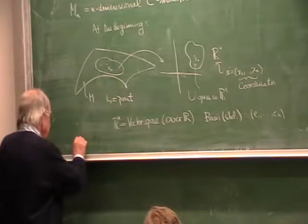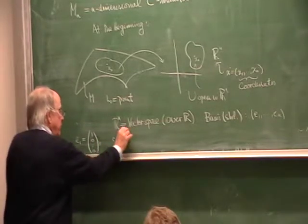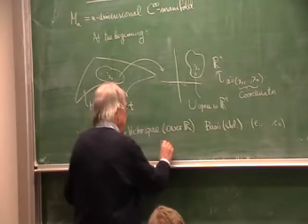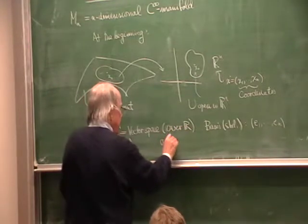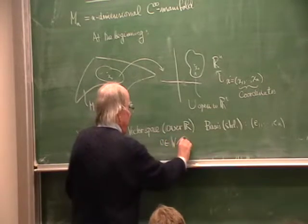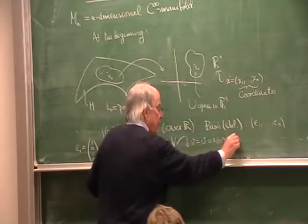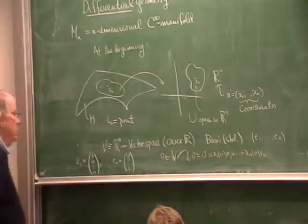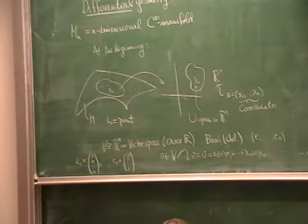If we have some element V in this vector space — which I identify with Rⁿ via the basis — then I identify it with Rⁿ by the coordinates, writing it as x₁(v)·e₁ plus xₙ(v)·eₙ. This is the first step in elementary linear algebra, and it is necessary for this subject.